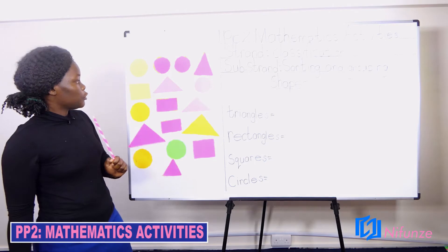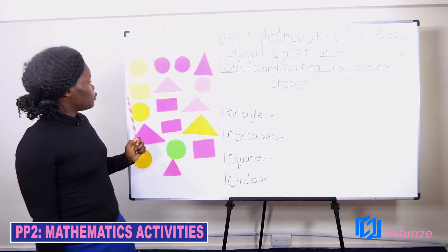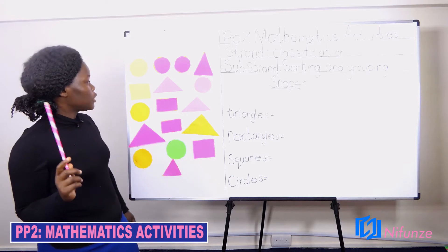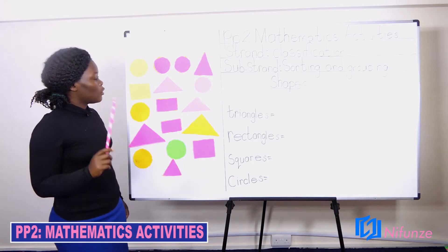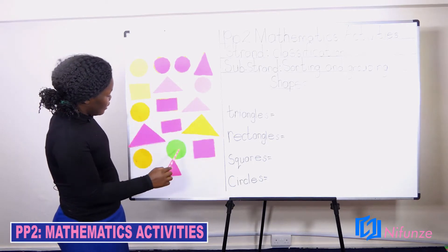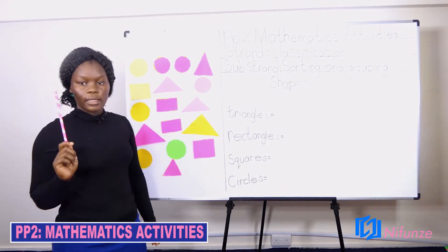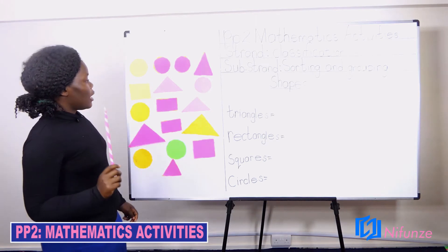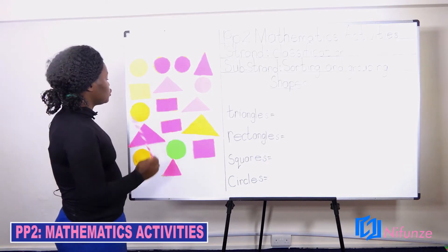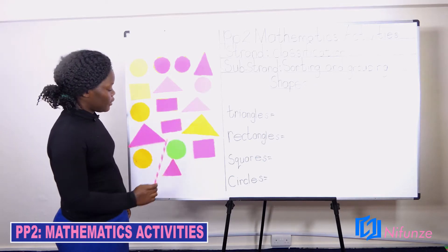Let's try to do that together. Eyes on board. We are going to start with the triangles. We sing this song as we sort out the triangles. Where are the triangles? Where are the triangles? Here they are. Here they are. Can you see the triangles? Can you see the triangles? Yes, yes, yes. How many triangles have we seen on the board? Let's count together. We have one, two, three, four, five, six.